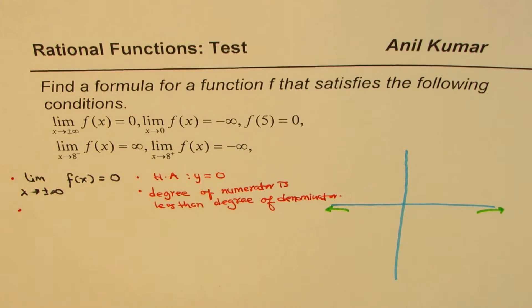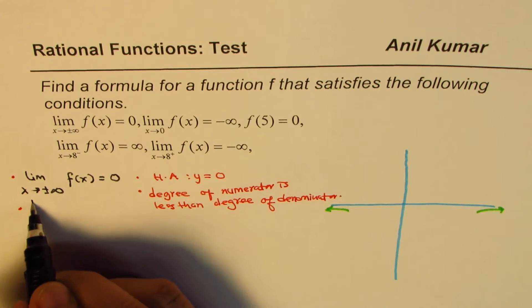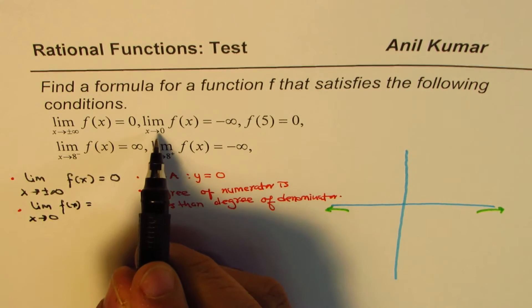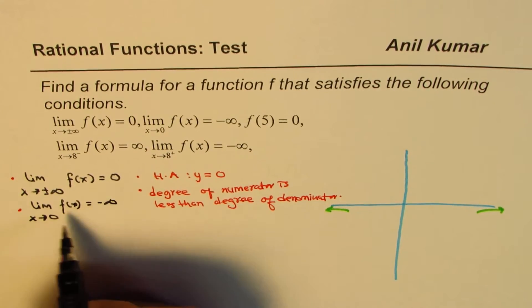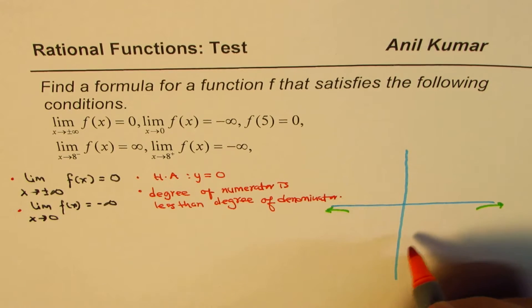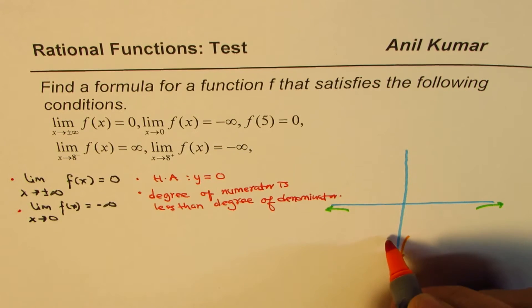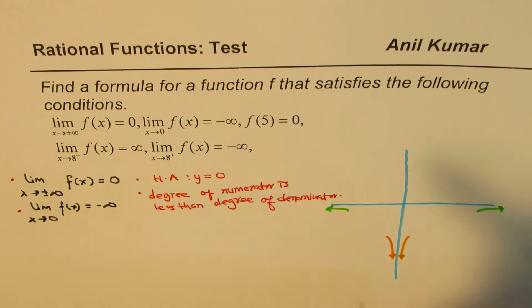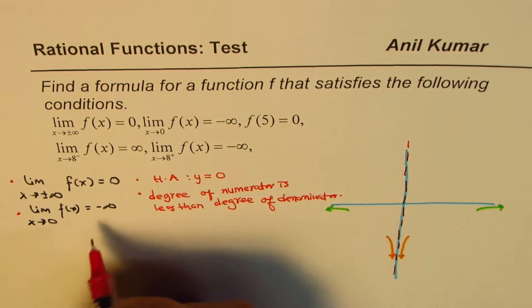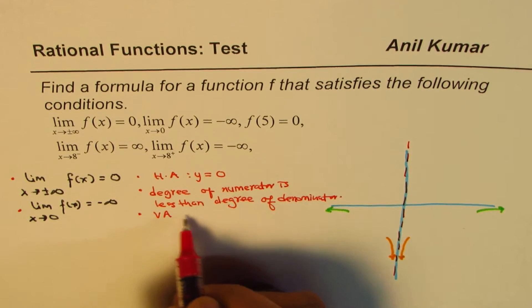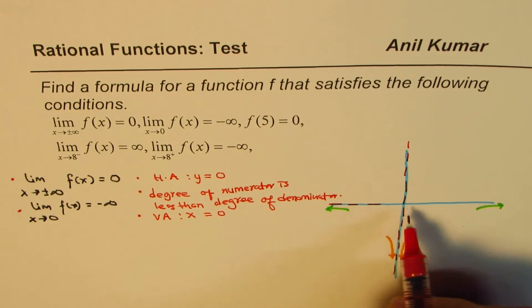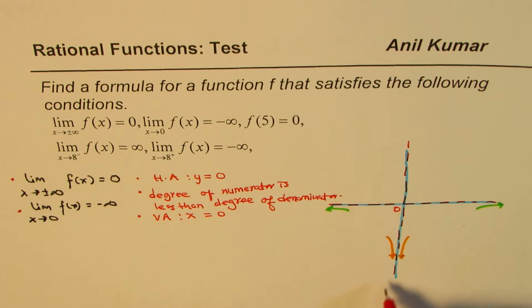The second condition is that the limit when x approaches 0 for the function f of x is minus infinity. We are not told from which side, so it means from either side — both sides go to minus infinity. This indicates that we have a vertical asymptote at x equals 0. So we have a horizontal asymptote at y equals 0 and a vertical asymptote at x equals 0.